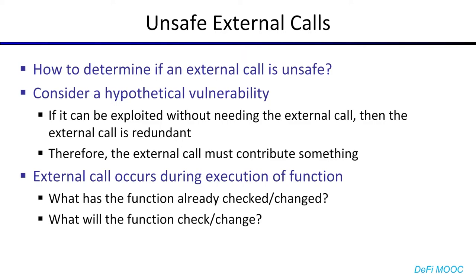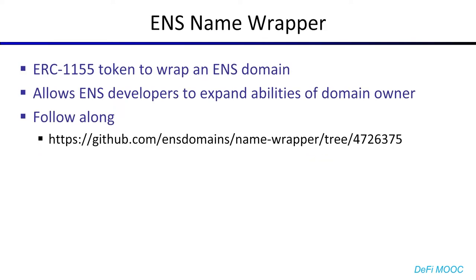To take a look at how a so-called safe transfer function might introduce unsafe behavior, I found two case studies. The first is the ENS Name Wrapper. This is an ERC1155 token designed to wrap an ENS domain. The purpose of this is to allow ENS domain owners to have finer permission management over the domain — for example, forbidding future subdomains from being minted or forbidding the resolver from being changed. The GitHub repository and the relevant commit are provided in the slide.